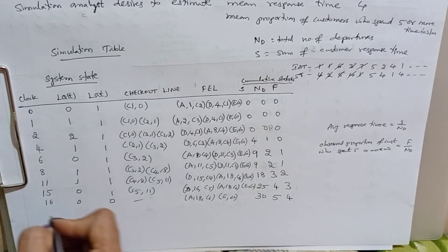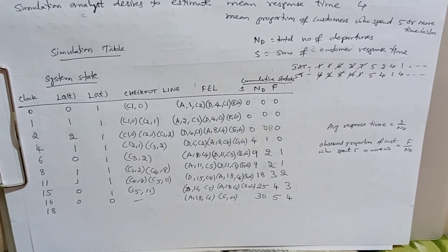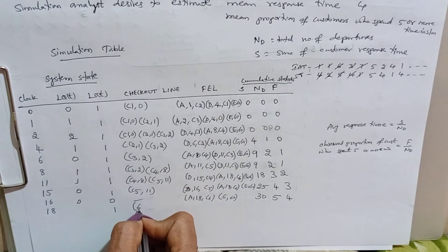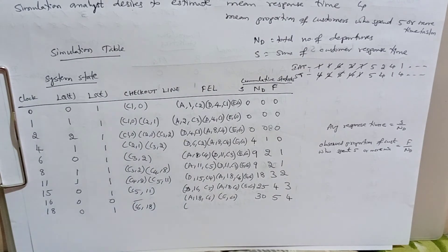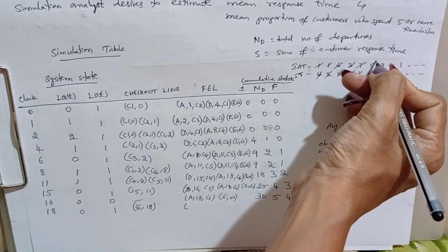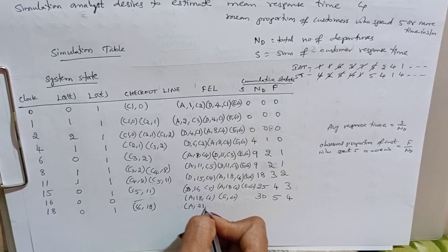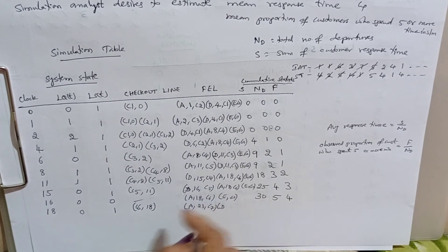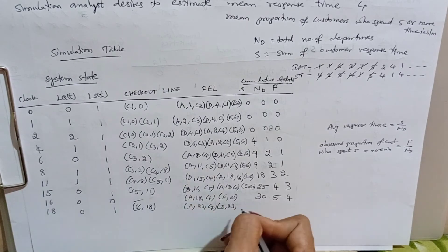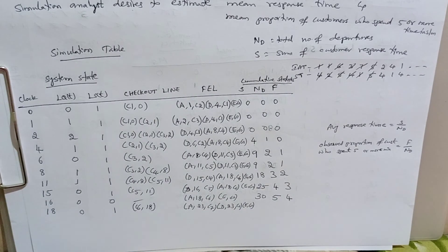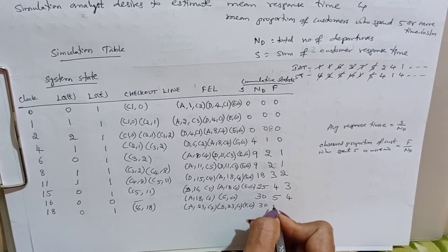Time advances to clock time 18. Customer C6 arrives. No customers are in the queue, so C6 enters service immediately. We calculate C6's departure: 18 plus service time 5 equals 23 minutes. Next inter-arrival time is 5, so next arrival is at 23 for customer C7. Stopping time remains 60. Since no departure has occurred at this event, no statistics need to be updated.